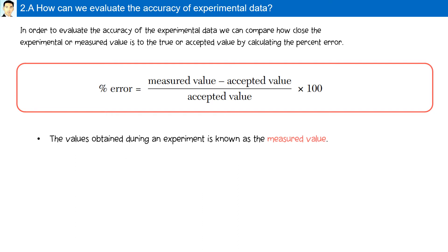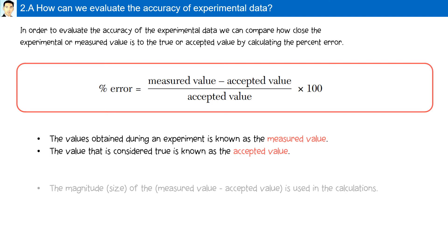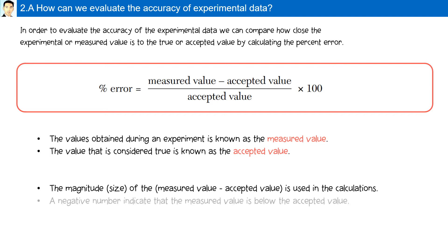The values obtained during an experiment are known as the measured values. The value that is considered true is known as the accepted value. The magnitude of the measured minus the accepted value is used in the calculations. A negative number indicates that the measured value is below the accepted value.